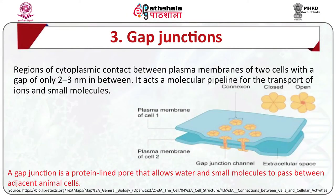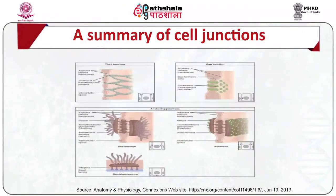The third major type of cell junctions are the gap junctions. These are regions of cytoplasmic contact between the plasma membranes of two cells with a gap of only 2 to 3 nanometers in between. They act as a molecular pipeline for the transport of ions and small molecules. Such cellular connections are significant as they allow adjacent cells to be in direct electrical and chemical communication with each other.